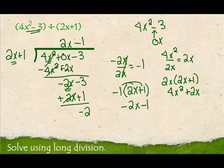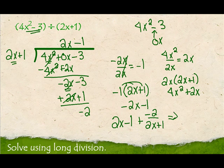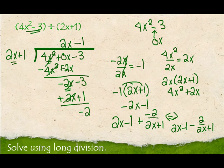Since there's no x in negative 2, and there's an x in 2x, they're not like terms, so I can't divide them. My answer is 2x minus 1 plus negative 2 over 2x plus 1. Some instructors will write it as 2x minus 1 minus 2 over 2x plus 1 — these are actually the same answer. It's really up to your instructor.